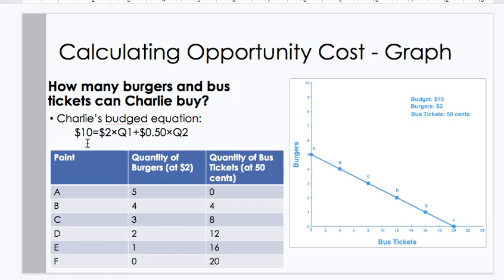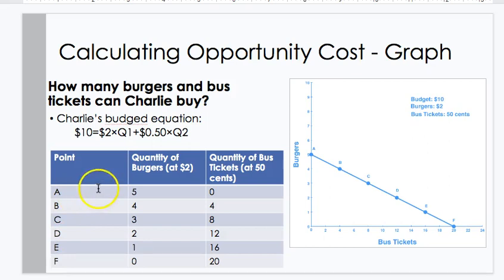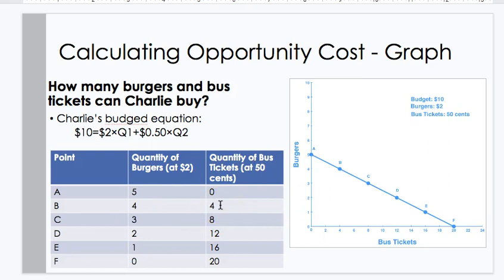We graph how many burgers and bus tickets Charlie can buy. We know Charlie's budget equation: $10 equals 2 times Q1 plus 0.5 times Q2. We can come up with a bunch of different scenarios and plot those on the budget constraint, where we spend all of Charlie's money. Point A: 5 burgers, 0 bus tickets. Point F: 0 burgers, 20 bus tickets. Point B: 4 burgers — 4 times $2 equals $8 — plus 4 bus tickets — 4 times $0.50 equals $2 — totaling $10. Every one of those points is on the budget constraint line.